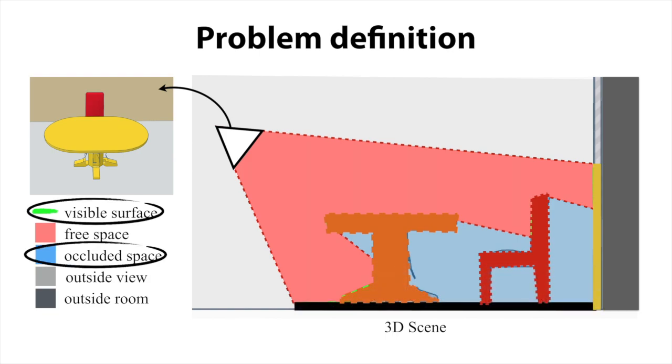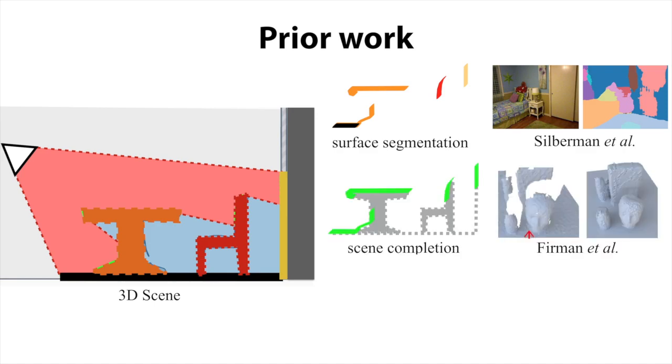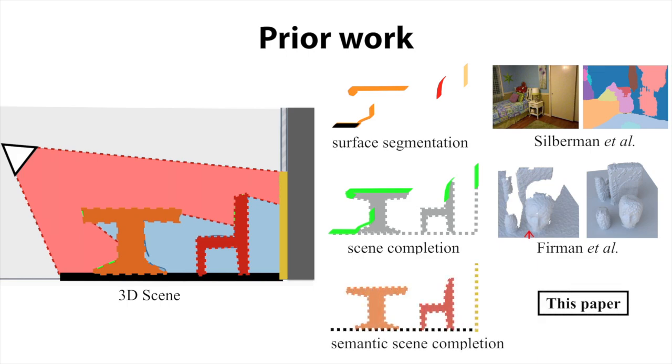Prior work is limited to addressing only part of the problem. For example, RGBD segmentation considers only visible surface without full 3D shape, and shape completion only considers local geometry without semantics. However, we observe that occupancy and object identity are tightly intertwined and therefore should be addressed jointly.